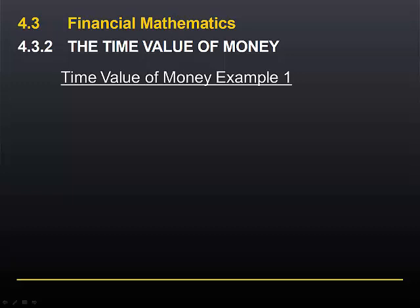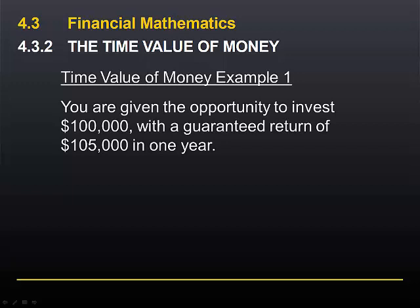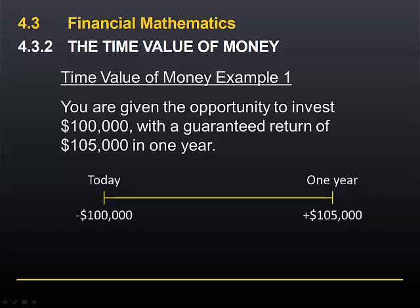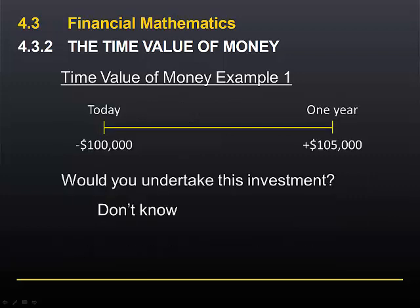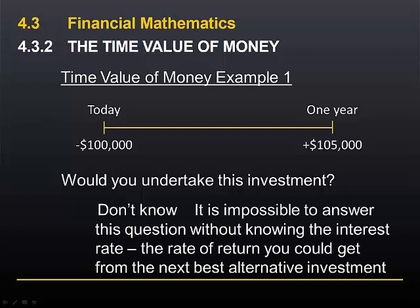We can illustrate this with a simple example. You are given the opportunity to invest $100,000 with a guaranteed return of $105,000 in one year. Would you undertake this investment? The correct answer should be that you don't know. We can't possibly answer this question without knowing the current level of interest rates, or what we could earn from an alternative investment. If you answered either yes or no, you were probably including your knowledge of current interest rate levels in your calculation. But without such information, we cannot make a rational decision.